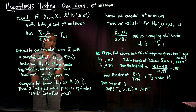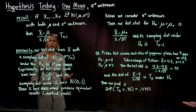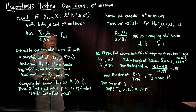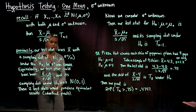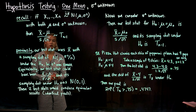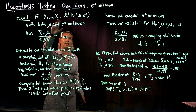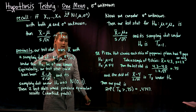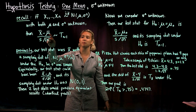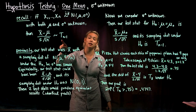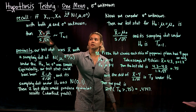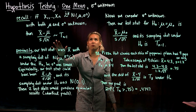This was all when sigma squared was known. But most of the time, if we don't know the mean, we won't know the variability either. So it's useful to think about how to do hypothesis testing when we do not know the variance sigma squared. This should remind you of confidence intervals for a mean when sigma squared is unknown. If we have a random sample of size n from a normal distribution with mean mu and variance sigma squared — both unknown — then x bar minus mu divided by s over root n has a t distribution with n minus 1 degrees of freedom.